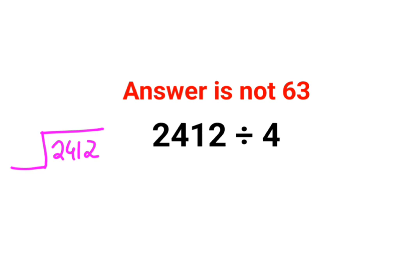Now in case of 2412, the first number is 2. The problem is 4 doesn't divide 2 completely, so we'll go to the next number. So here, in this first case, you are allowed to jump the first number, second number, or third number till the time your divisor doesn't divide it or comes closest to your first two or three digits.